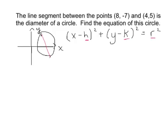So we'll start by trying to find the center. The center would be the midpoint of the diameter. So we want to find the midpoint of the diameter, and that would be the center of our circle. We recall that the midpoint is the average of the x-coordinates for the x-coordinate of the center and midpoint, and the average of the y-coordinates.